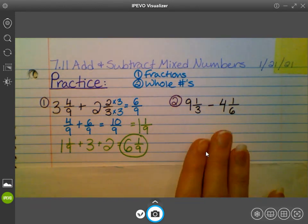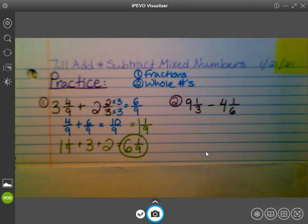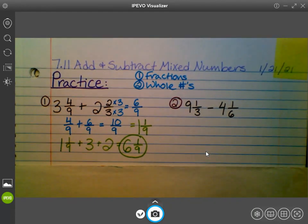So the first one, remember, was adding. Now we're subtracting. So we have 9 and 1 3rd minus 4 and 1 6th.